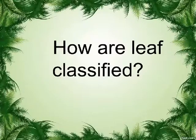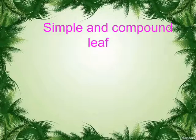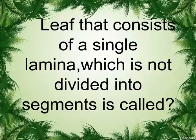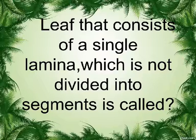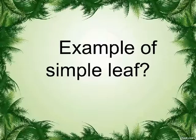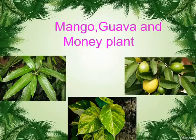How are leaves classified? Simple and compound leaf. A leaf that consists of a single lamina which is not divided into segments is called a simple leaf. Examples of simple leaves include mango, guava, and money plant.